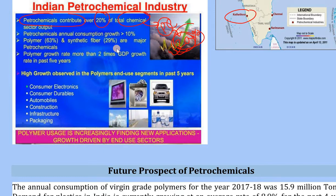The petrochemical industry has 20% annual growth — about 10% of the previous industry. Polymer is 63% of the industry, and synthetic fiber is 39% of the meso-petrochemical segment.